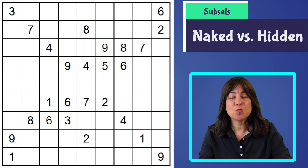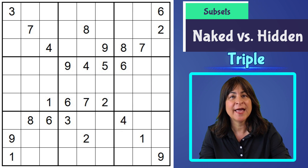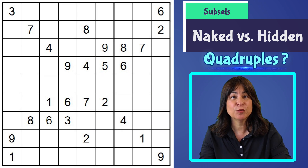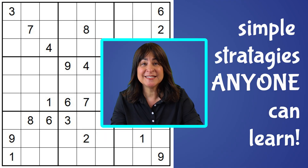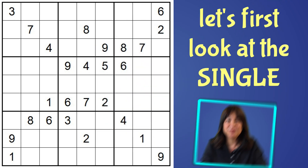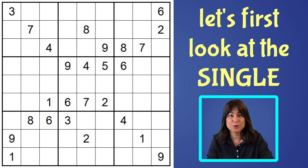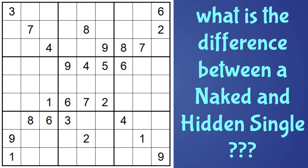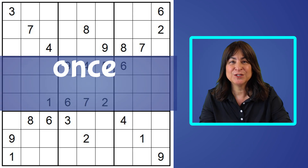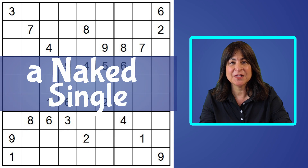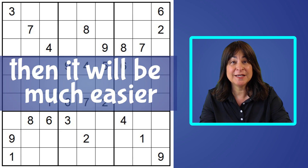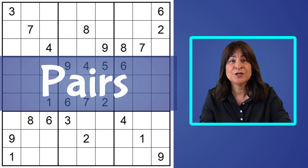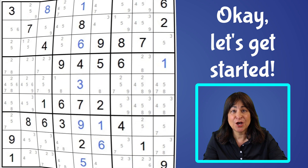Hello everyone. Did you ever wonder what the difference is between a naked pair and a hidden pair, or a naked triple and a hidden triple? What about quadruples or quintuples? These are amazingly simple strategies to help anyone solve a puzzle more easily. Before I talk about pairs, triples, or even quadruples, let's first take a look at the single and see what the difference is between a naked single and a hidden single. Once you understand that difference, it'll be much easier to understand when it is applied to pairs, triples, and quadruples. So let's get started.